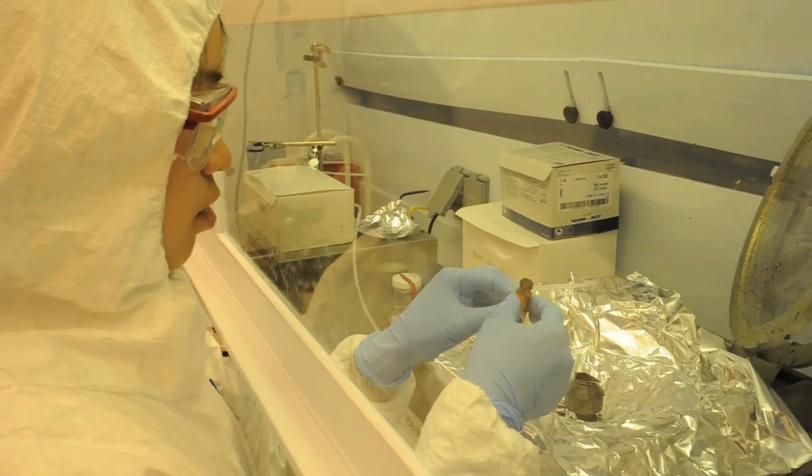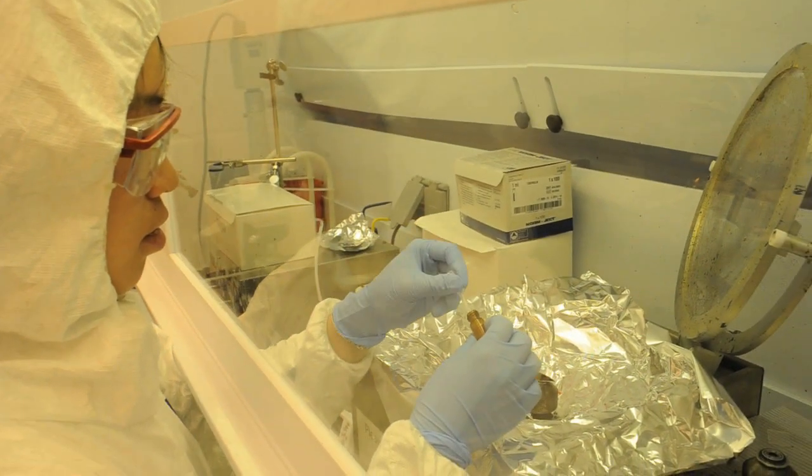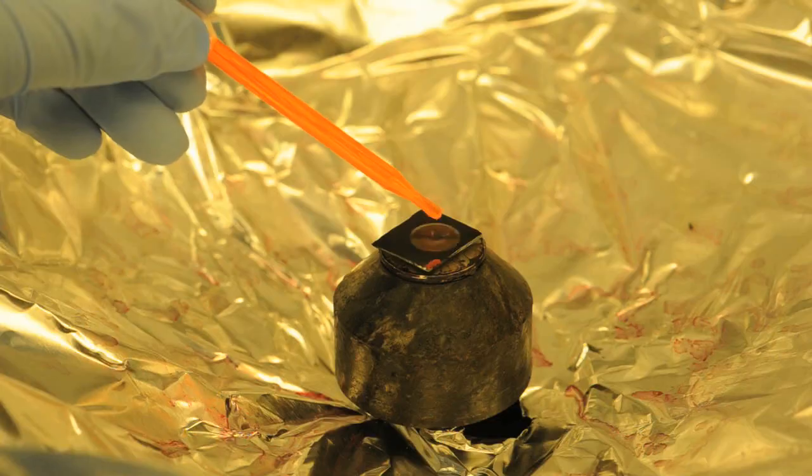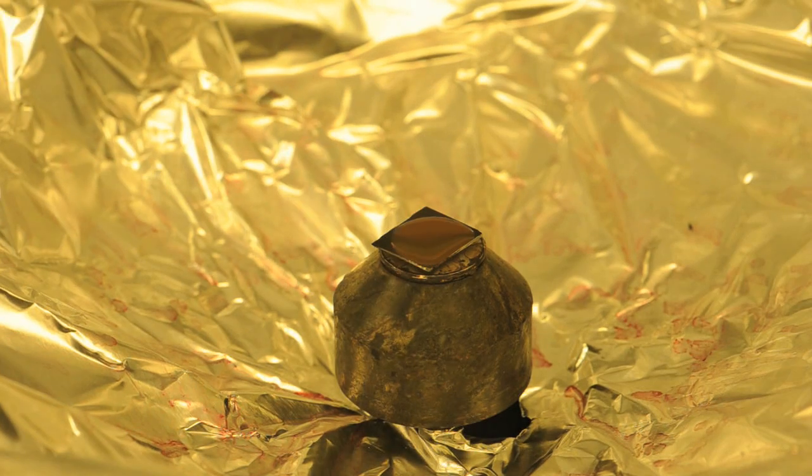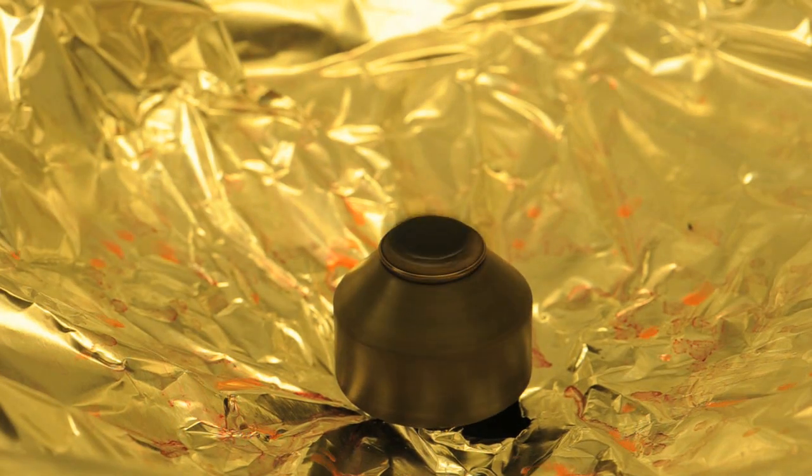We use a process called spin coating to make thin layers of these compounds. The layers end up being about 100 nanometers thick. That's about a thousand times thinner than my hair.